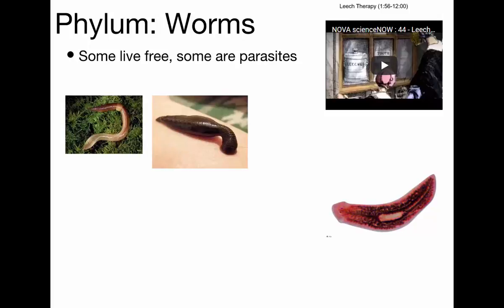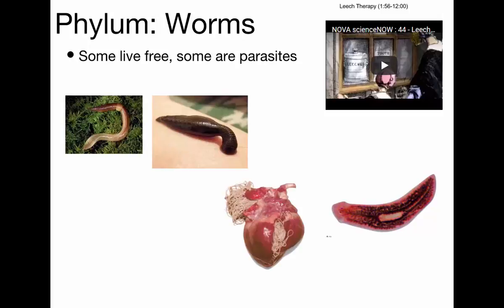This is a flatworm we're going to look at this week called a planaria. It's pretty neat because it has the ability to regenerate — if you cut it in half, each half will grow into a whole new worm. This other flatworm here — the white stuff — is heartworm inside a dog's heart. If you have a dog, you might give them a HeartGard medicine tablet each month. Those are an anti-parasitic medication to prevent infection with this parasitic worm.